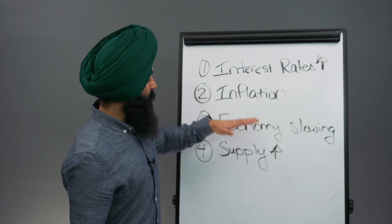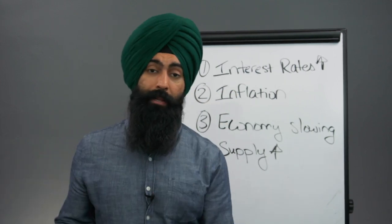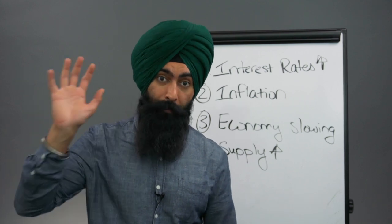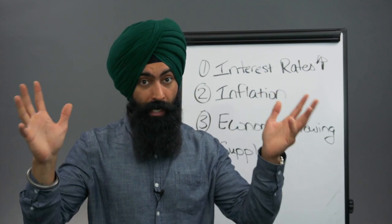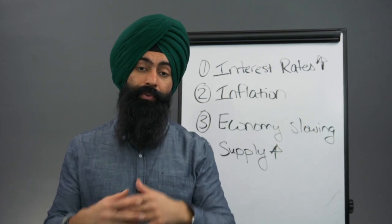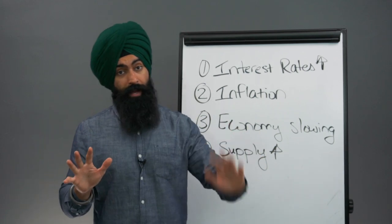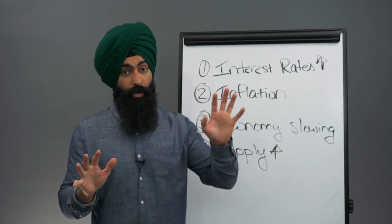Each of these factors are putting downward pressure on car prices because car prices are ultimately determined by supply and demand. When you have more buyers than sellers, the price of this thing goes up. When you have more sellers than buyers, the price of this thing tends to go down. What we're seeing happen right now is we're finally starting to see more supply. We're finally starting to see some more cars.